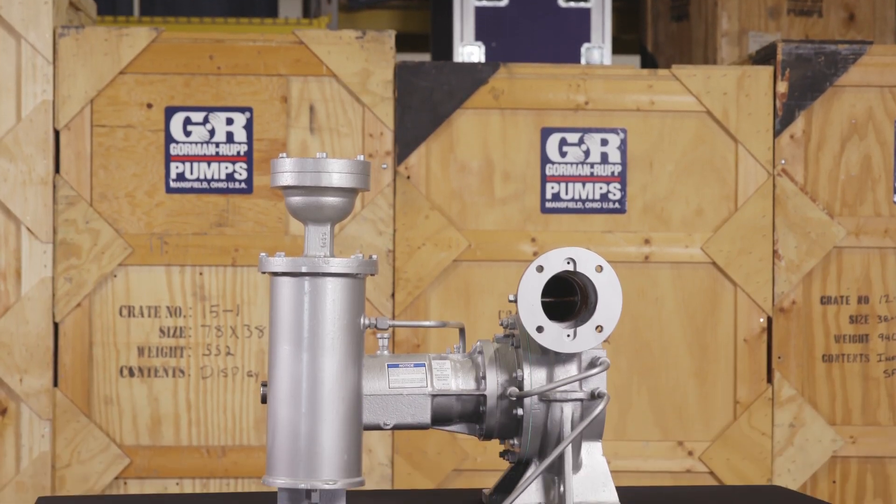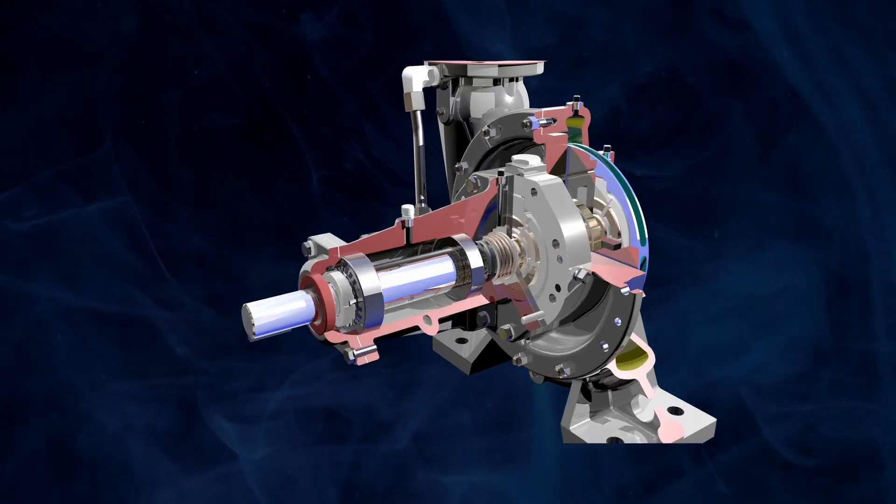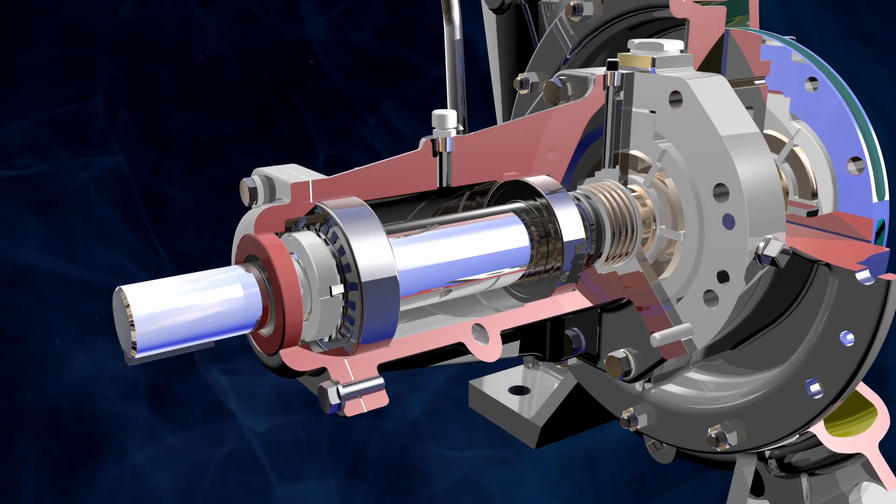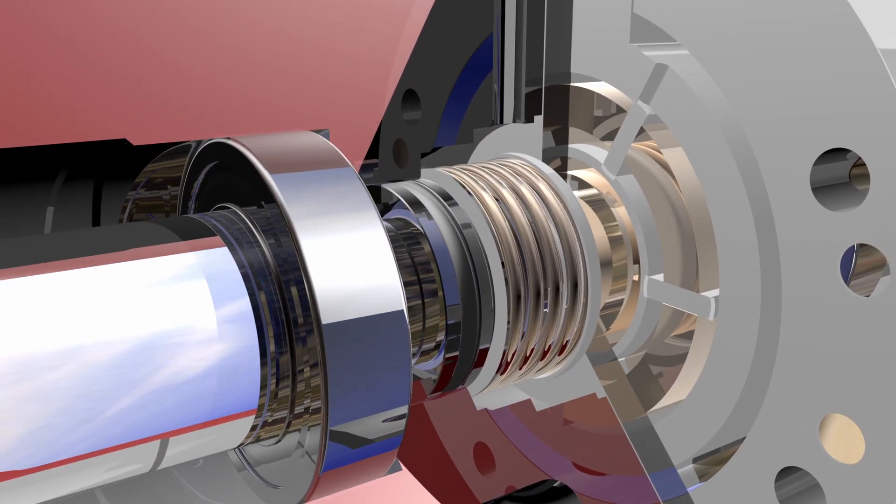Gorman-Rupp Rotoprime pumps are engineered for durability and reliability. Built from rugged ductile iron or optional cast steel, with permanently lubricated bearings and a self-lubricated mechanical seal.